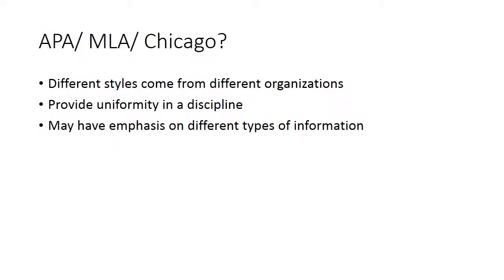APA, MLA, Chicago, IEEE — there are hundreds of different citation styles out there and nobody expects you to know each and every single one of them. Different styles come from different organizations. You're going to need them in different formats and different things that you're doing. For an English class, you might use MLA. For a communications class, you might use APA. If you go into engineering, you might use IEEE. It really varies.